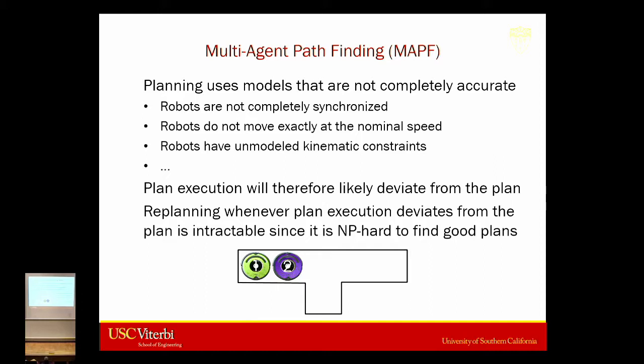The answer we often have in AI is: when there's some deviation from the plan, we just replan. But there are lots of problems with this. In particular, we're solving an NP-hard problem, so we're already stressing the solvers to cope with more and more agents. We can't go in every second and say we need to replan — that just won't work.